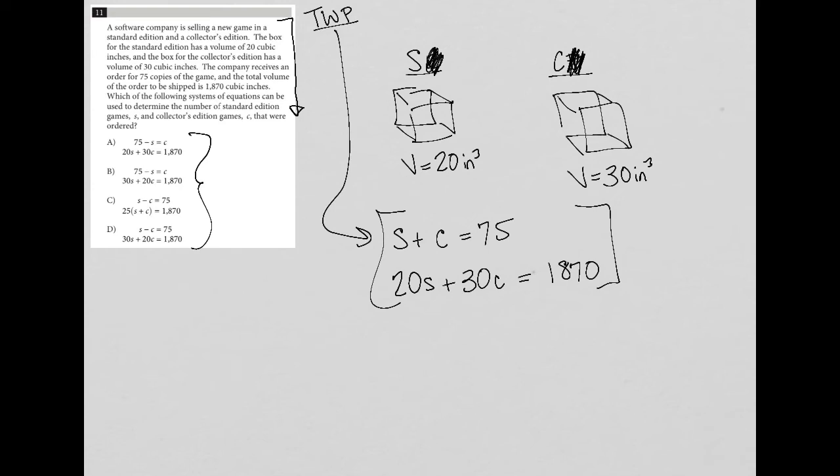OK, so we want to see which answer choice matches what we know to be true that we've already outlined here. So choice A, 75 minus S equals C. Well, that is true. I could subtract S from both sides. That would be a true statement. And then 20S plus 30C equals 1870. So I actually like answer choice A.